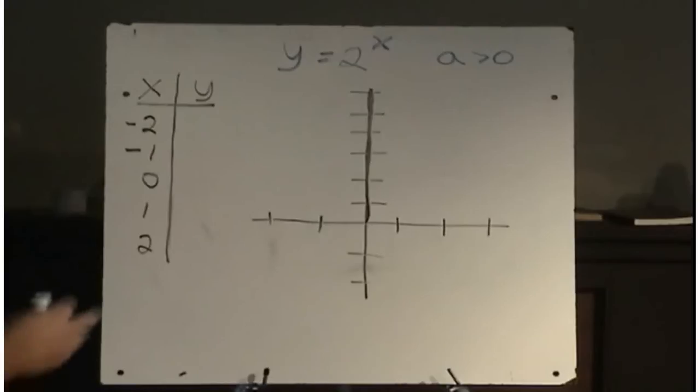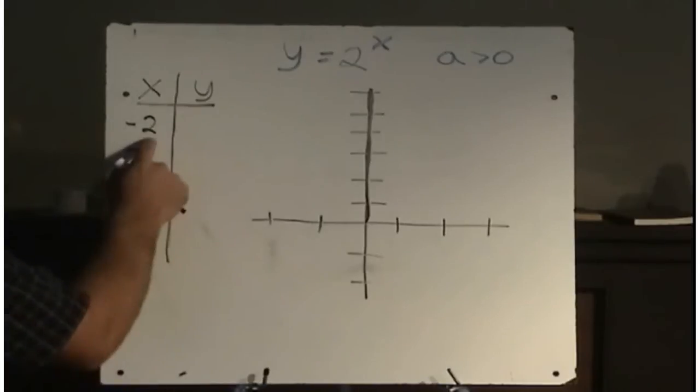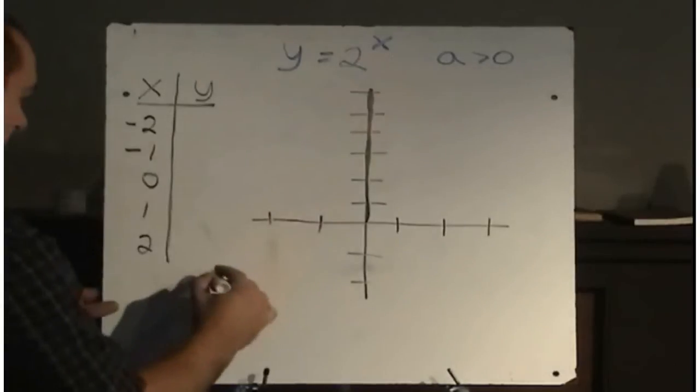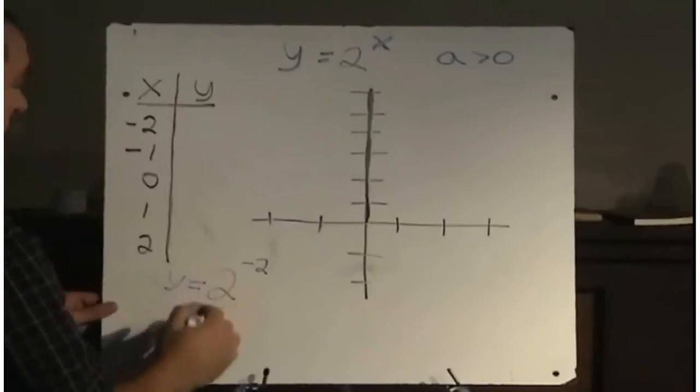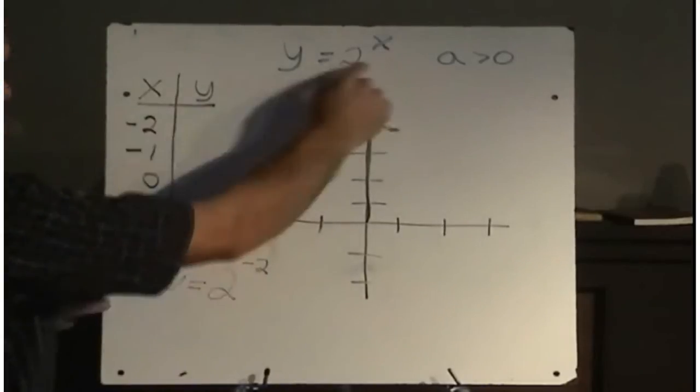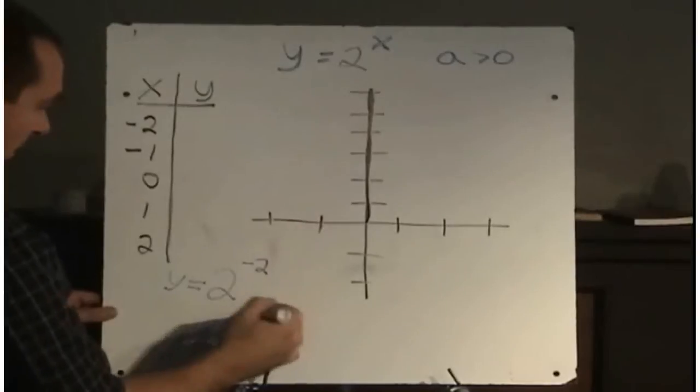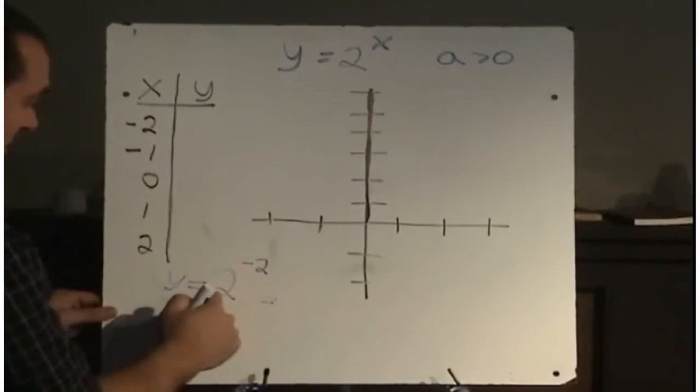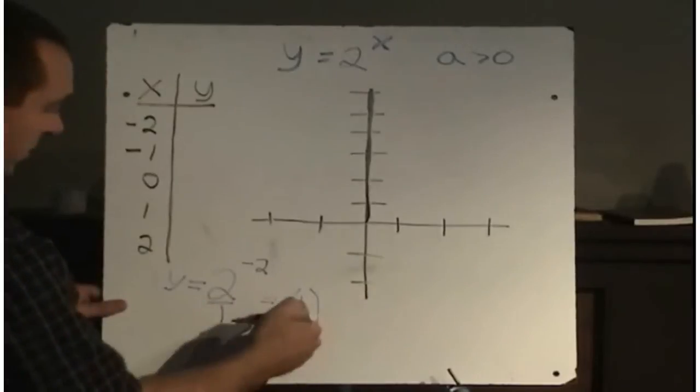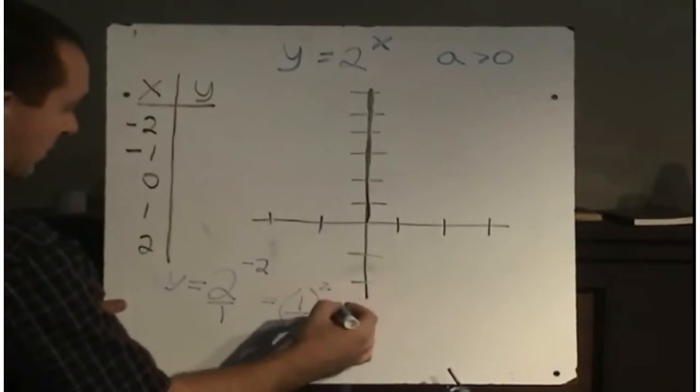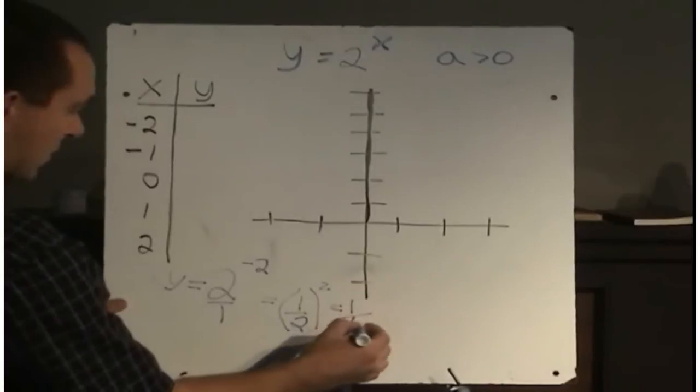So on the left side here I've got a table of values. Let's see what happens when we have an x value of negative 2. When we have an x value of negative 2, so y equals 2 to the power of negative 2, replace the x with minus 2. Remember what a negative exponent does? The negative exponent means take the reciprocal of the base. So what this would actually be is 1 half, because 2 is the same as 2 over 1, and if you take the reciprocal of that you get 1 half. So it would be 1 half squared, which is 1 quarter.